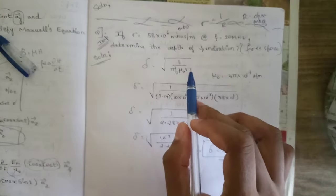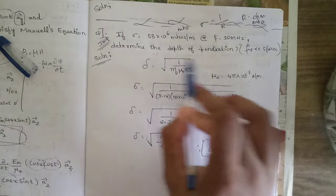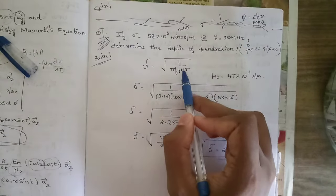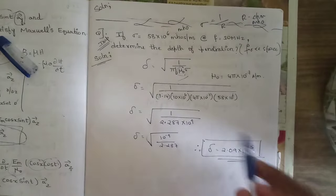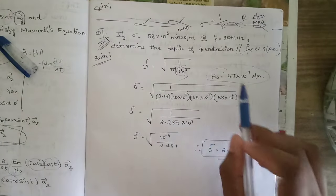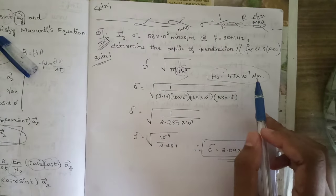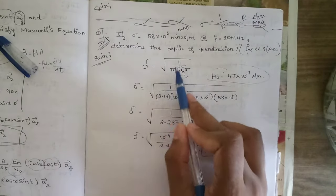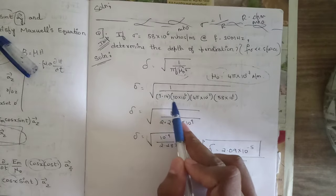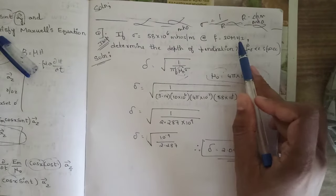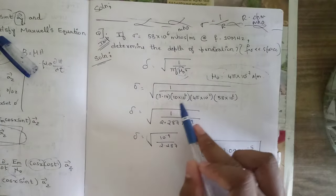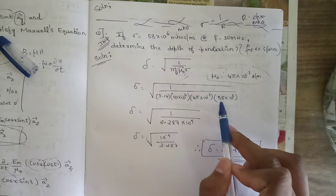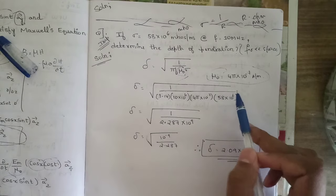The depth of penetration formula is: δ = √(1 / πf · μ₀ · σ). Since it is in free space, μ = μ₀ = 4π × 10⁻⁷ H/m. Substituting: δ = √(1 / (π × 10 × 10⁶ × 4π × 10⁻⁷ × 58 × 10⁶)).